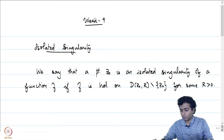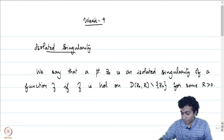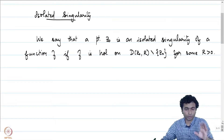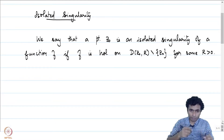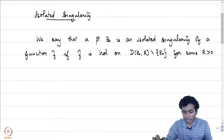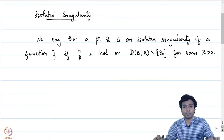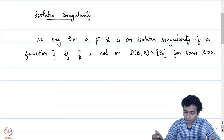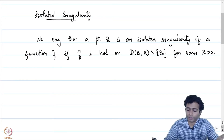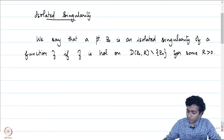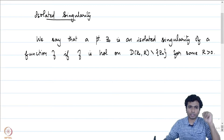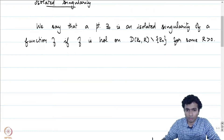We do not know whether f is defined at the point z0 or not. We know that in a punctured disk of radius r around z0, the function is defined and it is holomorphic. If this happens, then we say that the point z0 is an isolated singularity of our function f.